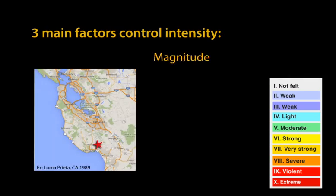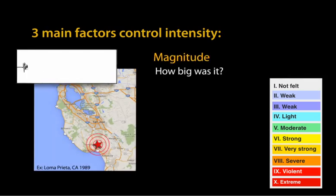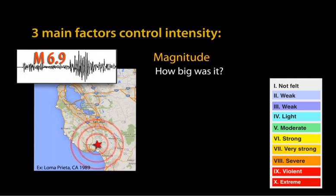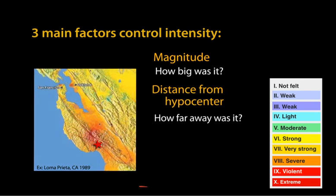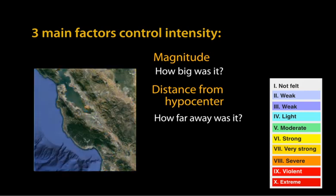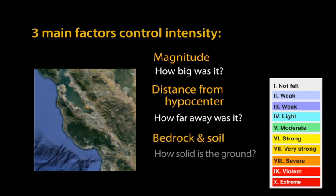Intensity is mostly controlled by three factors: magnitude — how big the earthquake was; distance from the hypocenter — intensity varies from place to place; and the local rock and soil conditions.